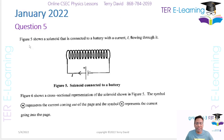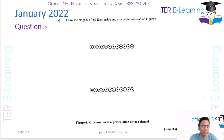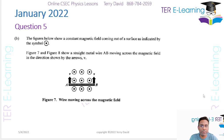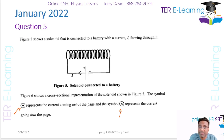All right, so question five. We have a solenoid — a solenoid is essentially a coiled wire — and we have a current I flowing through this coiled wire. Figure six shows a cross-section representation of the solenoid, and they give us two symbols: this represents the current coming out of the page, and this represents the current going into the page. Those are typically the symbols we use.